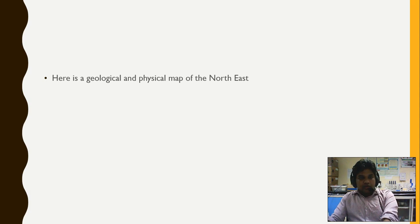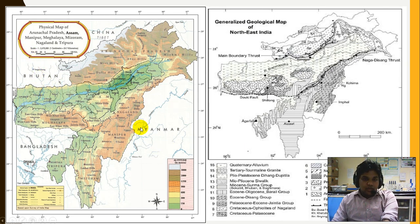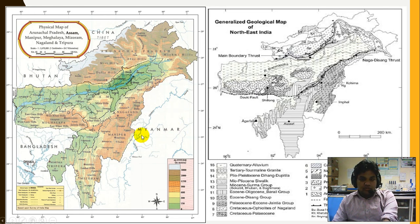Here is the geographical and physical map of northeastern India. Assam shares its border with Bhutan and Bangladesh. Mizoram, Manipur, and Nagaland share borders with Myanmar on this side. Arunachal Pradesh shares a border with China and Tibet in this portion.